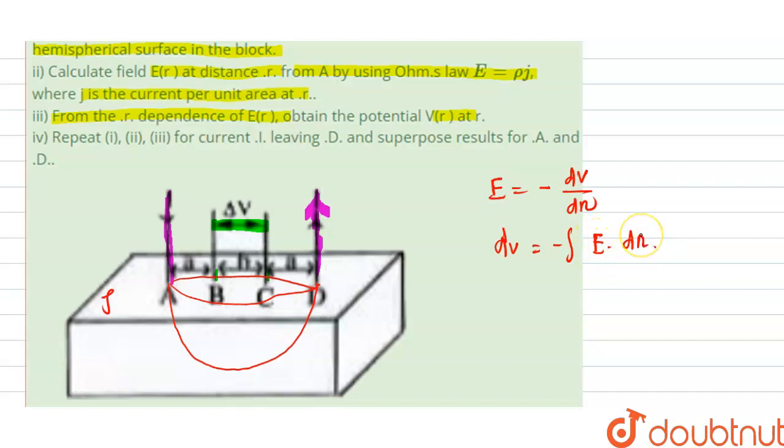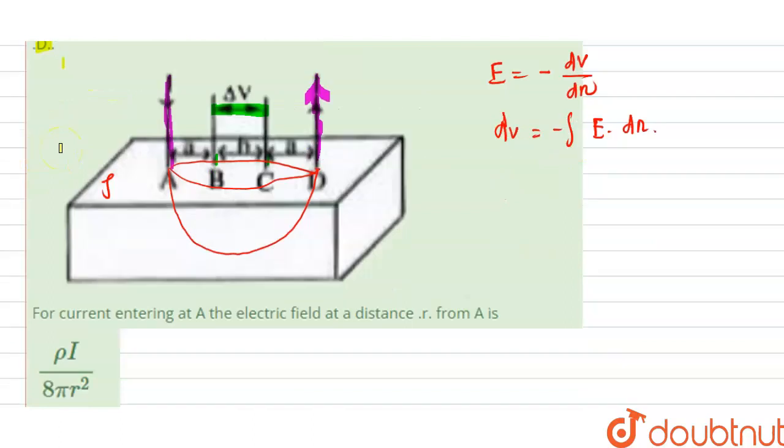So we can easily find the potential. But how to find the electric field? And repeat steps one, two, three for current I leaving D and superposition result for A and D. In this question we have to find basically for current entering A, the electric field at a distance r from A.